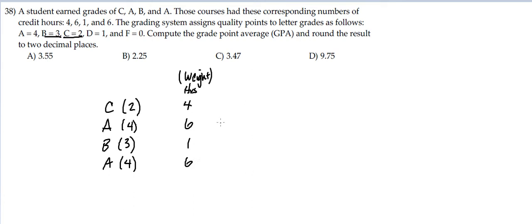We're going to calculate this GPA. We take 2 times 4, 4 times 6, 3 times 1, and 4 times 6. We get 8, 24, 3, and 24, and we add those up to get 59.